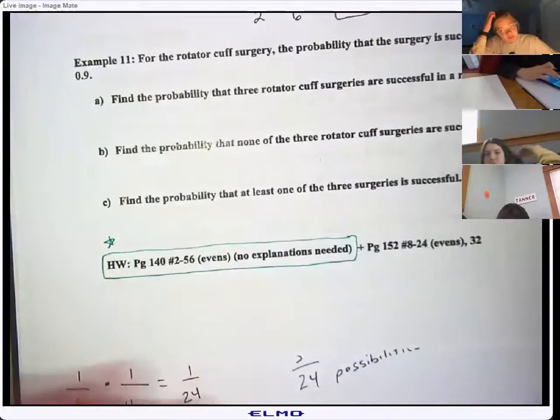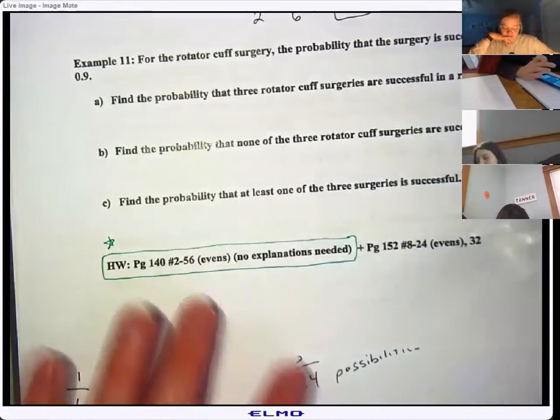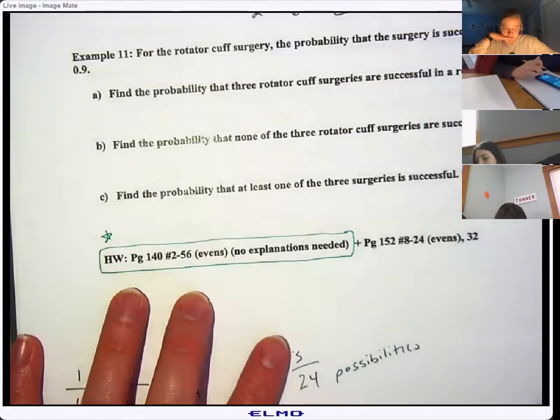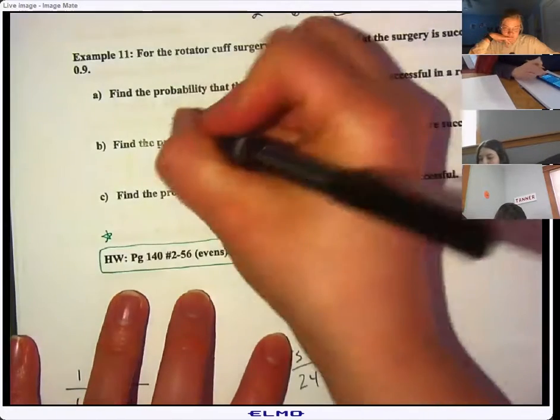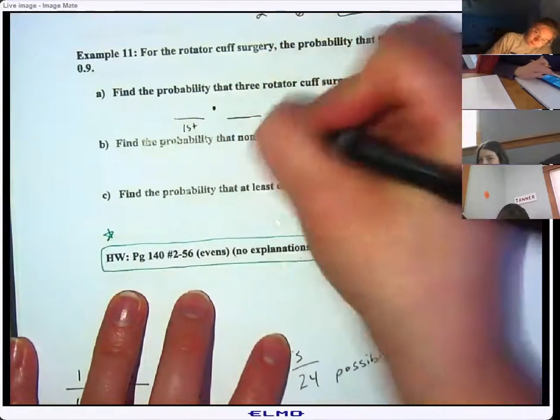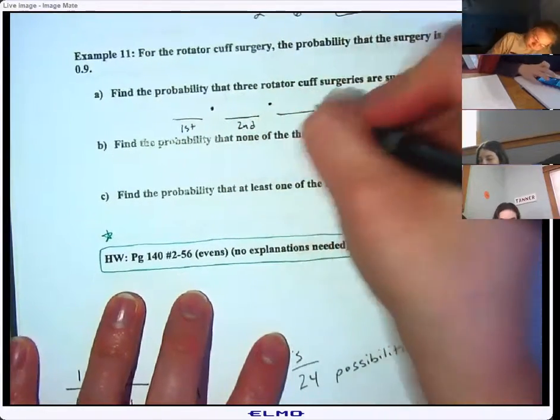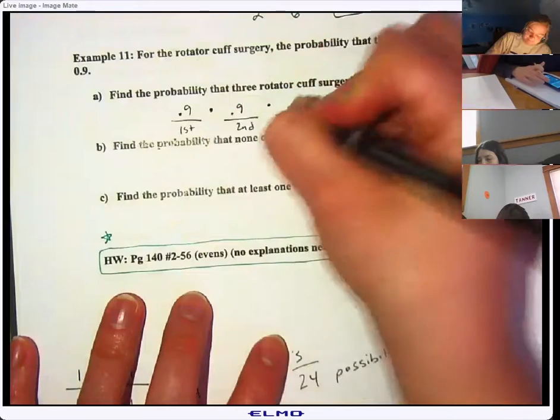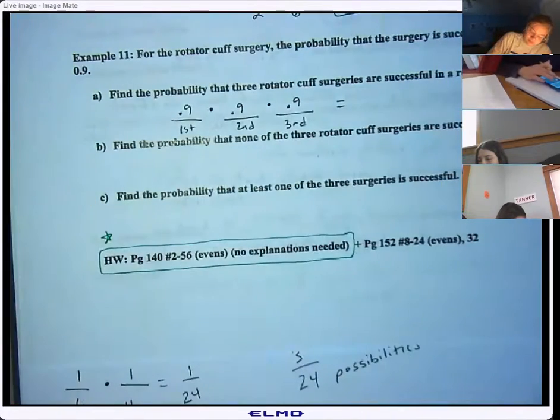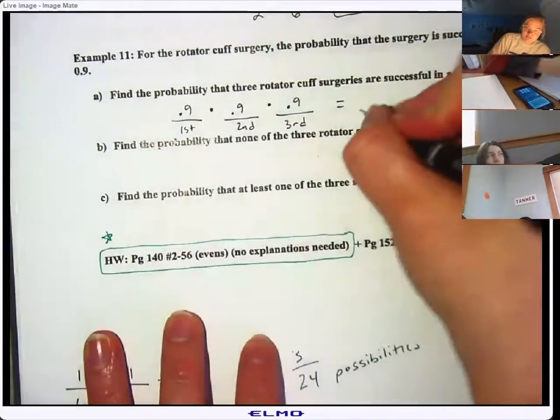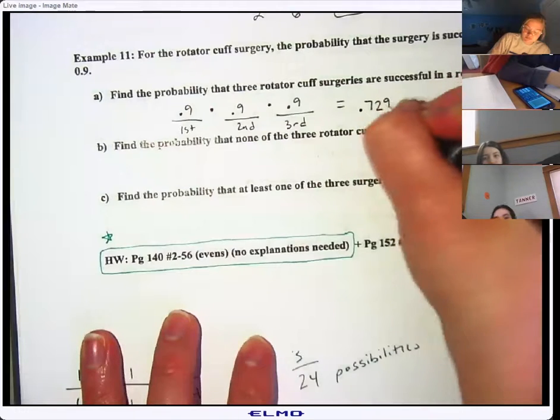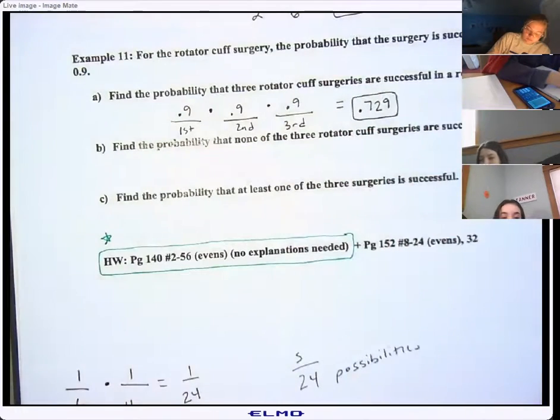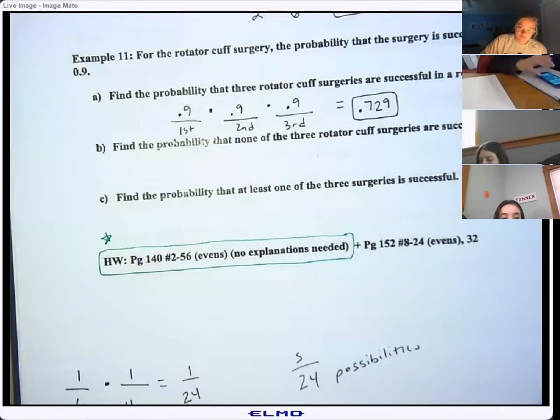All right. Number 11, for the rotator cuff surgery, probability that the surgery is successful is 90%, 0.9. Find the probability that all three are successful in a row. All right. So it's like the first one successful. I'm going to write first one down here. And the second one is successful. And the third one is successful. So that'd be 0.9 times 0.9 times 0.9, 0.9 to the third power. Look at it. Come down out there. Look how snowy it is out there. It's not going to be fun to drive home in. Yes. Congratulations. It's very good. All right. All three are successful. 0.729. Everybody okay with that?